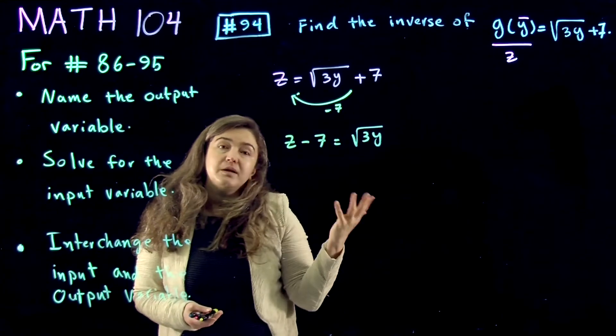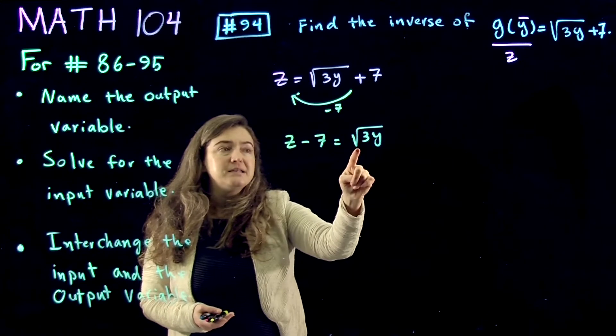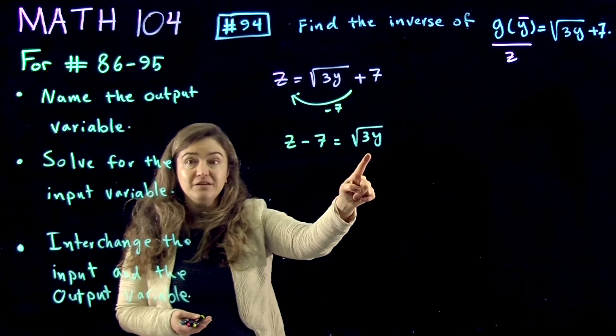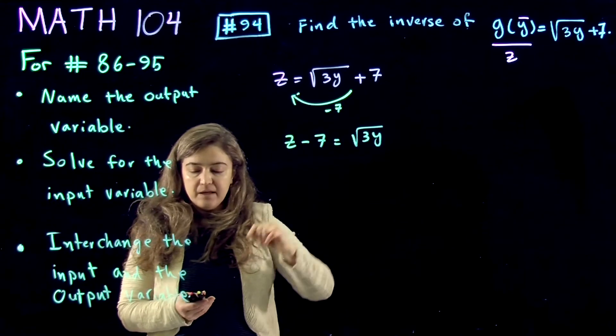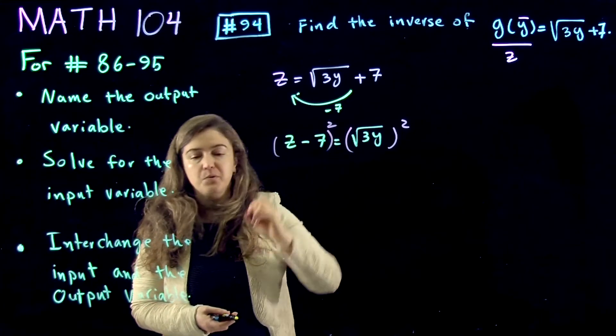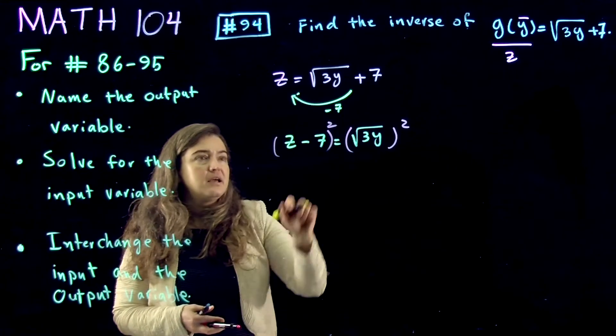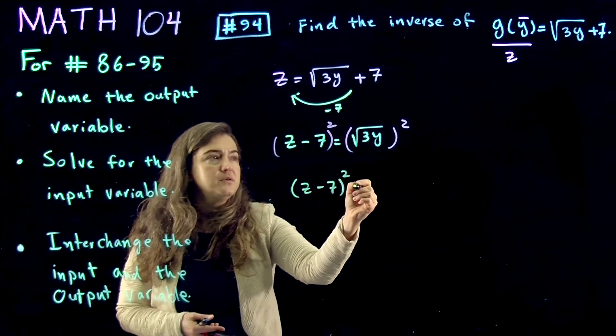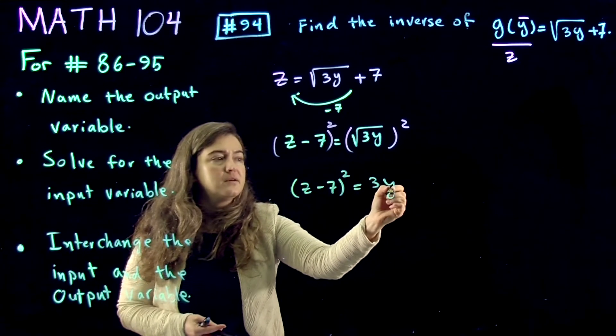So the input variable is by itself, but I have a radical in here. To get rid of the radical, I want to go to power 2, so we square both sides and we get z minus 7 to power 2 is equal to 3y.